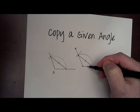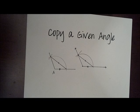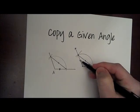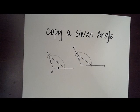This segment and this segment are definitely equal to each other because those are both radii of the same circle. Same thing for this segment and this segment—those are both radii of the same circle.